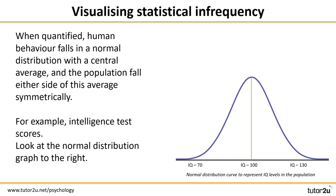In this example, the average IQ of the population is around 100. To determine whether someone has a rare or statistically infrequent IQ score, we look at how far their score falls either side of this average of 100. 68 percent of the population fall within one standard deviation of the mean — in other words, 68 percent of people have an IQ score not too dissimilar from the average of 100.